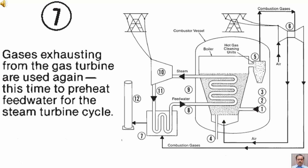Tag number 7. The gas exhaust from the gas turbines through the steam turbine are used again, this time to preheat feedwater for the steam turbine cycle.